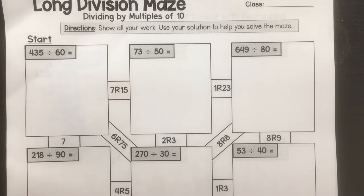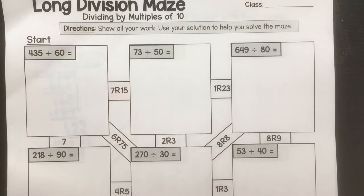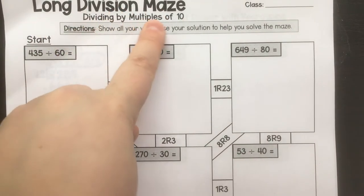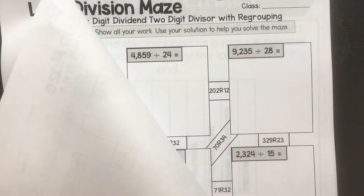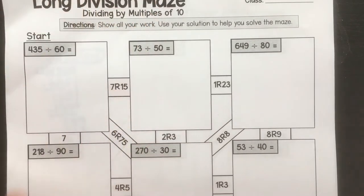You have two different pages. You're going to need this one that says long division divided by multiples of 10, and you're going to need this page, long division, two digit divisors with regrouping. So you have two different mazes in your packet.